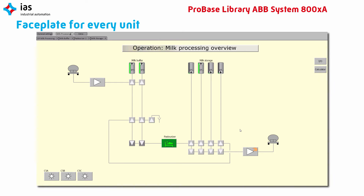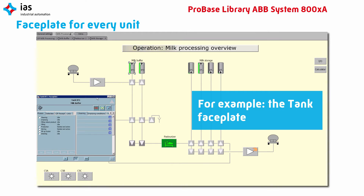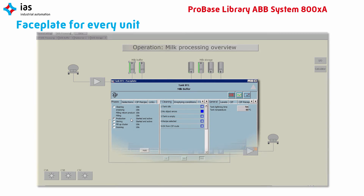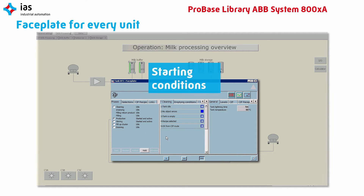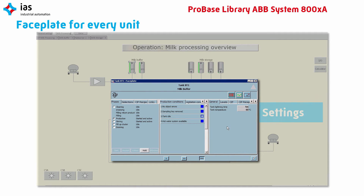Every unit has its own faceplate. Let's have a look at one of these faceplates — for example, the tank faceplate. On the left, you can see the functions of the tank, like cleaning, emptying and production. In the middle, you can see the starting conditions of every function. These conditions give the operator a clear overview of process and program interlocks. On the right, you can see the settings of this tank, like the tank temperature and the tank high and low level settings.